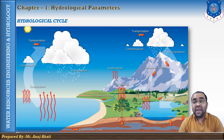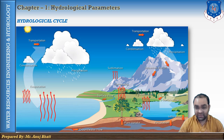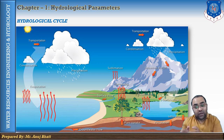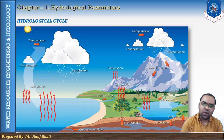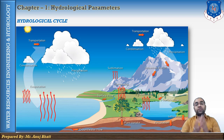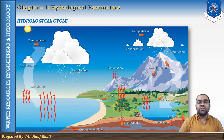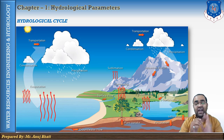The cycle may be considered to begin with ocean water, which is evaporated into the atmosphere. The vapor is condensed by various processes and falls to the earth as precipitation. Some precipitation falls directly on the ocean and some falls on land. A portion of precipitation that falls on land is retained temporarily in the soil, in surface depressions, or on vegetation until it returns to the atmosphere by evaporation and transpiration.